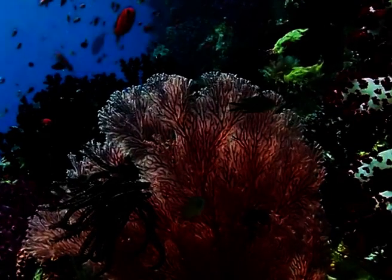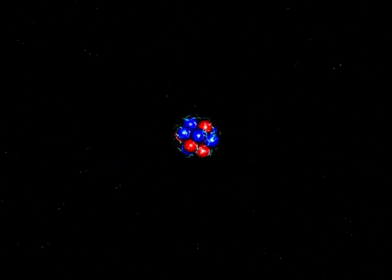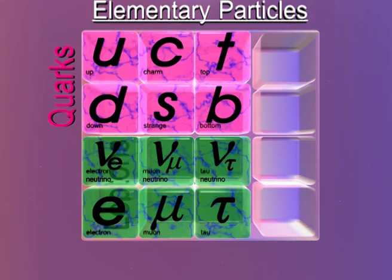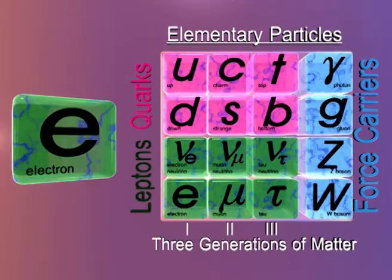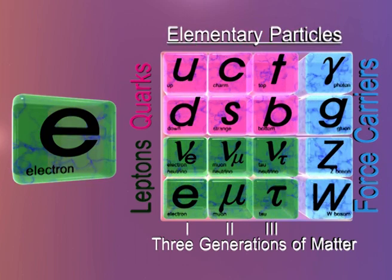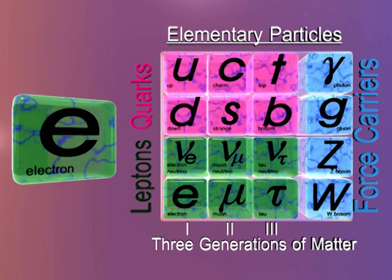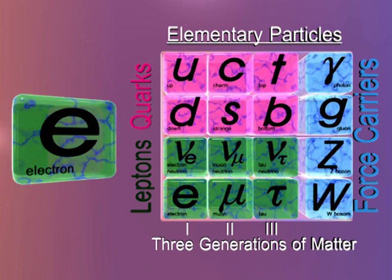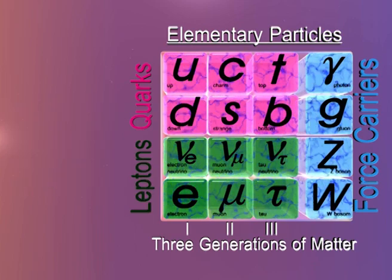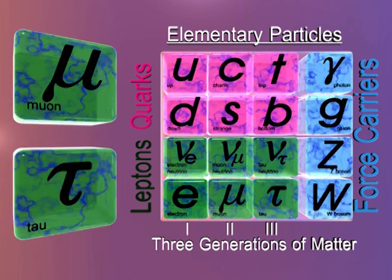All things that we see around us are made of atoms. An atom consists of a nucleus containing neutrons and protons. Electrons go around this nucleus. An electron is an elementary particle — by elementary we mean that they cannot be divided further. Scientists have discovered that electrons have two cousins, similar in behavior but heavier.